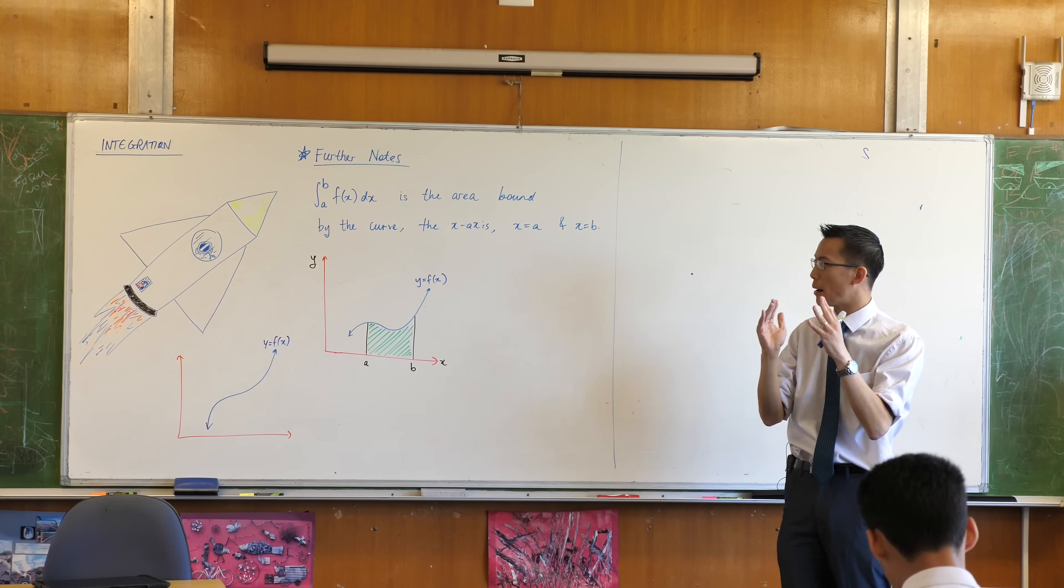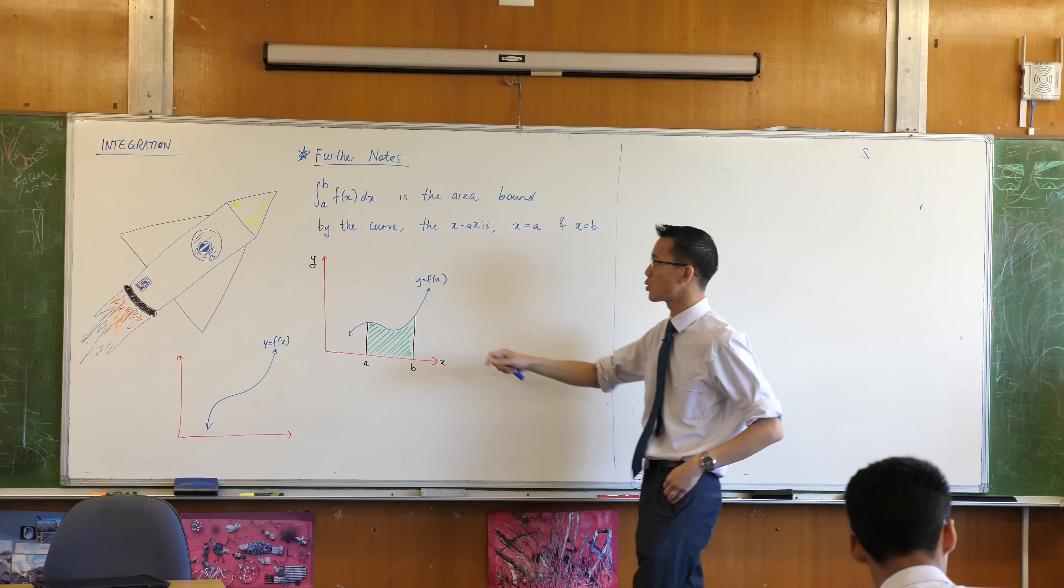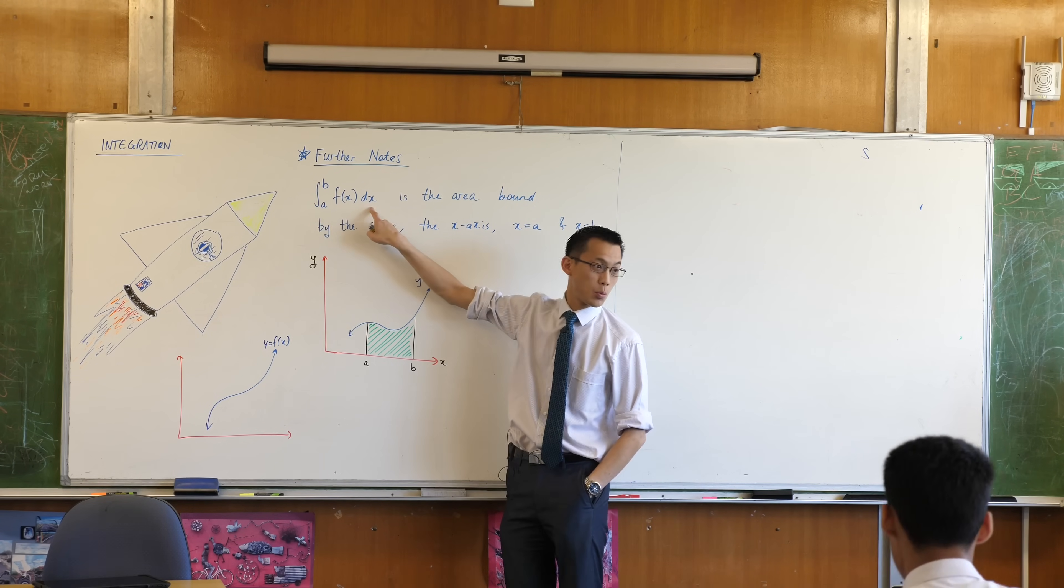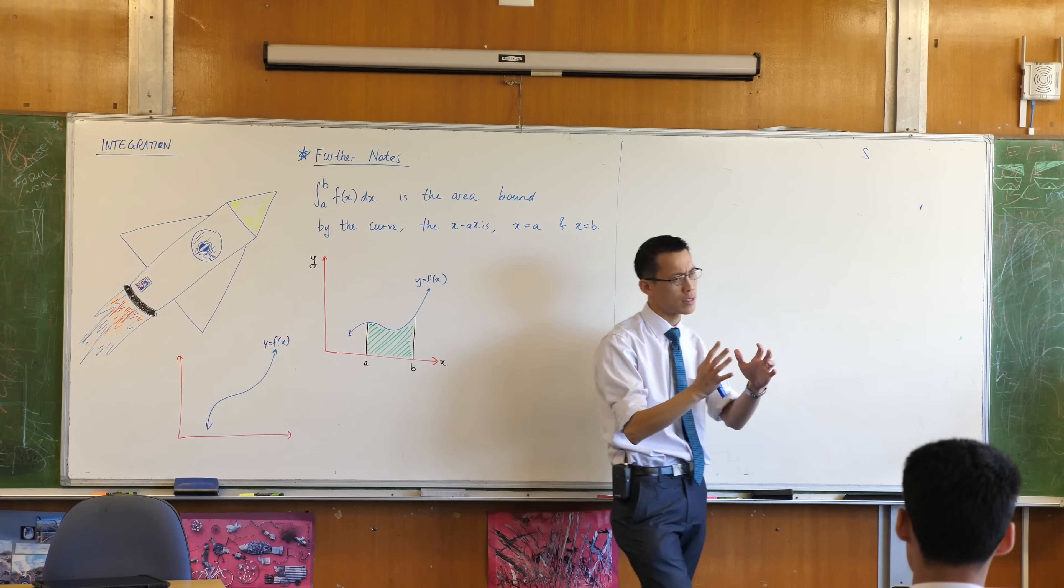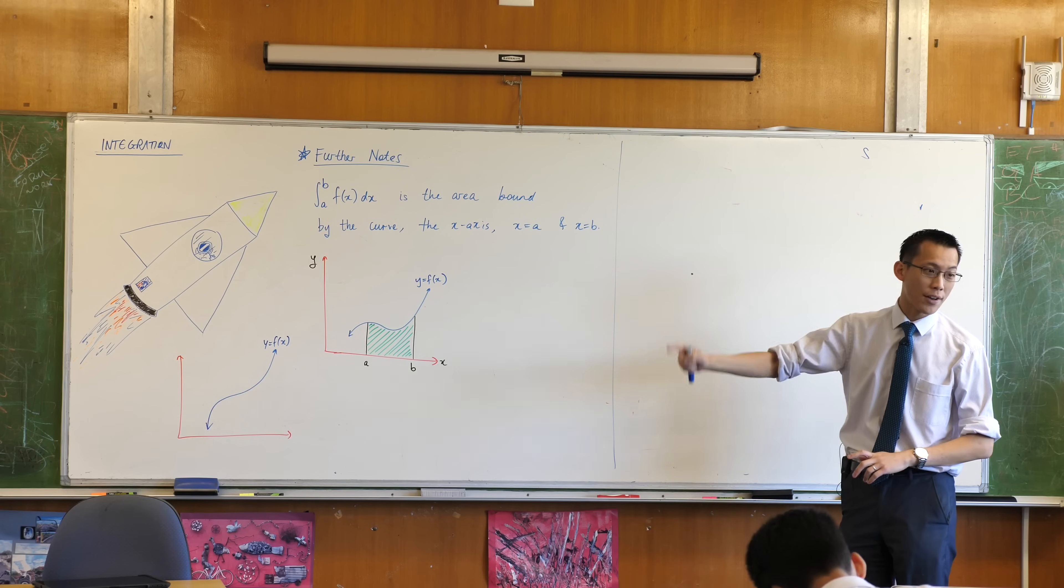The sum is going to be a bunch of rectangles, and those rectangles have this height and this width. And you remember how we constructed that in the earlier example with the rocket.